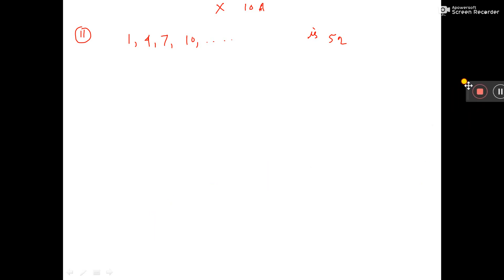Which term of the series is 52? So I am writing, let the nth term is 52. That is, Tn is equal to 52. Now what is the formula of Tn? A plus (n minus 1) into d is equal to 52.